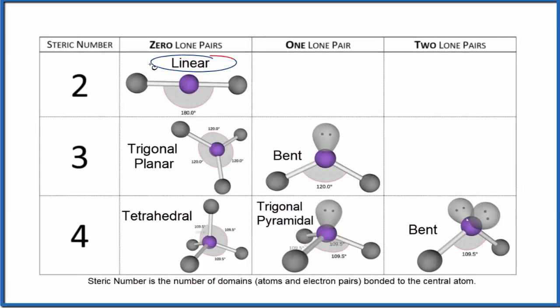Let's take a look at the linear molecular geometry or molecular shape. When we're talking about a linear molecular geometry, we're talking about a steric number of two. That means there's two things attached to our central atom and we don't have any lone pairs on the central atom. So that's our linear molecular geometry and the bond angle here is 180 degrees.